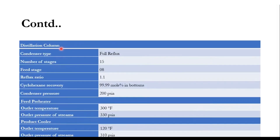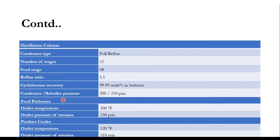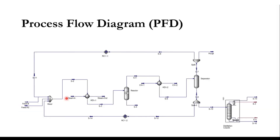Specifying the pressure drop in the reactor is a new concept we will study here for the first time. In the distillation column, the condenser type is full reflux with 15 stages, feed stage at 8, reflux ratio of 1.1, and 99.99 mole percent cyclohexane recovery in the bottoms, with condenser pressure 200 psia and reboiler pressure 210 psia.